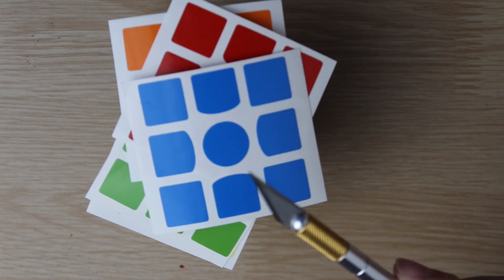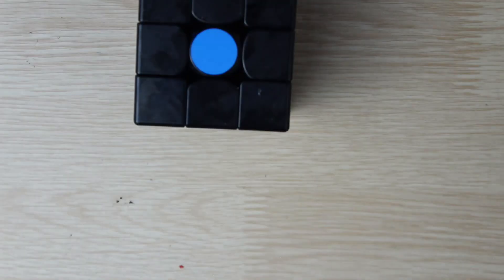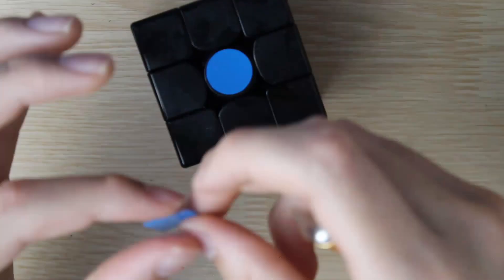Now to apply the stickers. For this part I'm going to use my X-Acto knife and gently peel off one single sticker and place it on the cube very carefully. Hopefully nothing goes wrong.